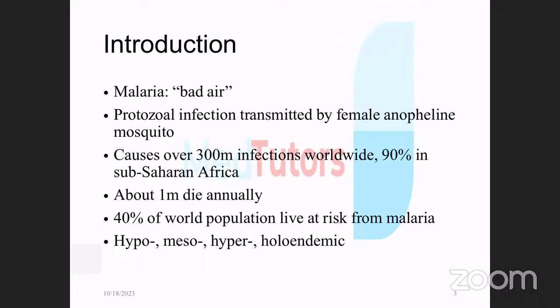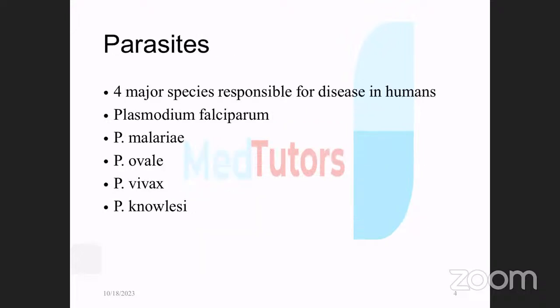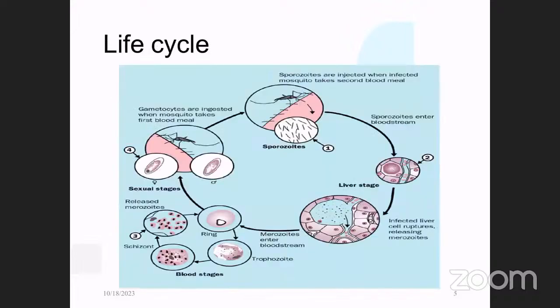Forty percent of the world population is at risk from malaria. Based on splenic rates, malaria is graded into hypo, meso, hyper, and holo. There are four major species responsible for disease in humans, but some years back another species — Plasmodium knowlesi — was discovered, making it a total of five species.